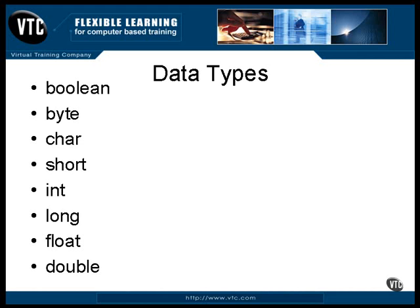Also, unlike C, the Java data types all have a fixed size. It stays the same no matter what computer system the Java program is compiled and running on. If you have a C background, you can forget about the int being whatever the native size of an integer happens to be. In Java, an int is always 32 bits long.